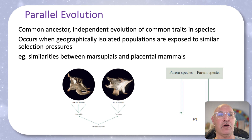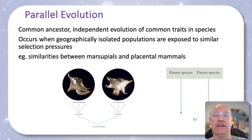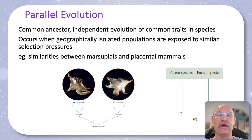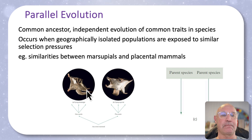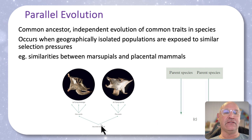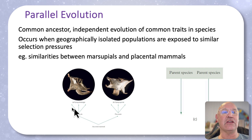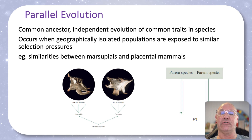Parallel evolution is where there is a common ancestor but there's independent evolution of common traits. Populations are geographically isolated but they've got similar selection pressures, so they evolve adaptations that are quite similar. For example, we have a marsupial glider and a placental glider — they share a common ancestor but evolved these characteristics independently because they're isolated but have similar selection pressures, and therefore tend to develop the same sorts of adaptations.